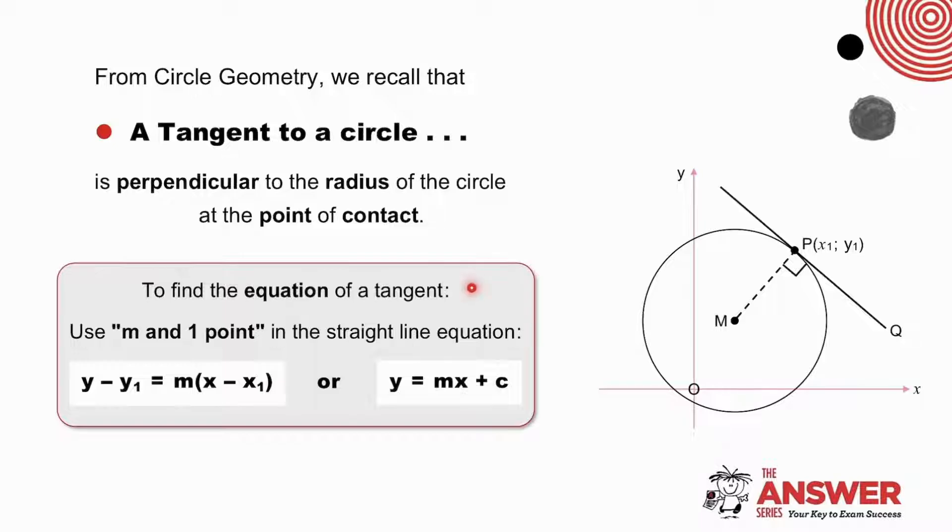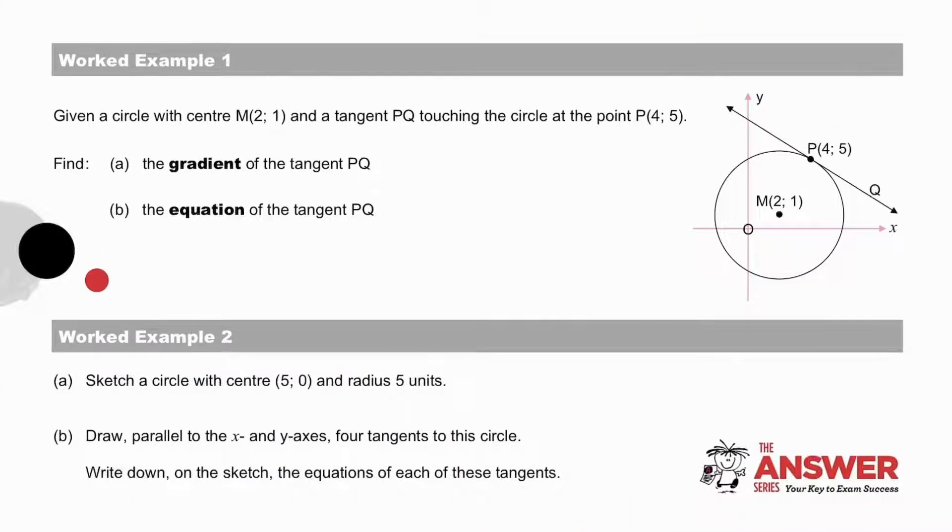To find the equation of a tangent, we use the gradient m and a point in the straight line equation, either that one or that one. Now pause to apply this in worked example 1, where you need to find the gradient and then the equation of the tangent PQ. And something different in worked example 2.